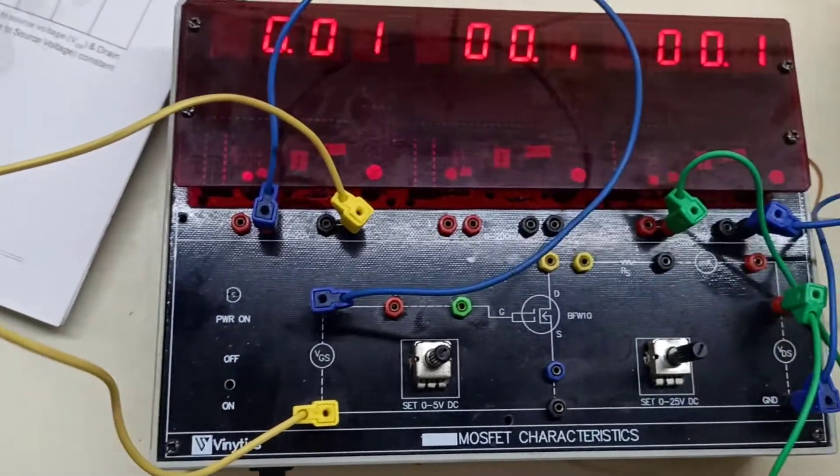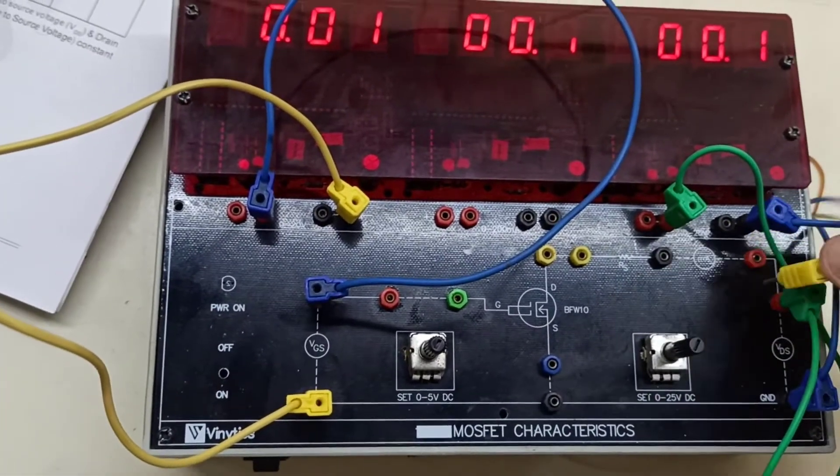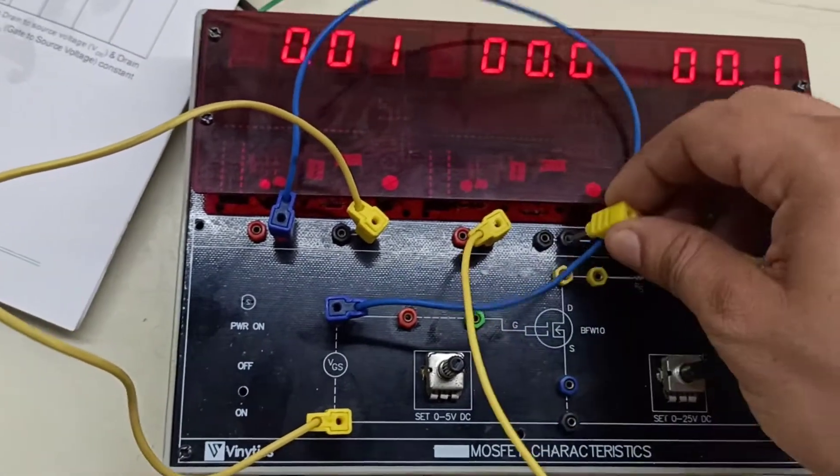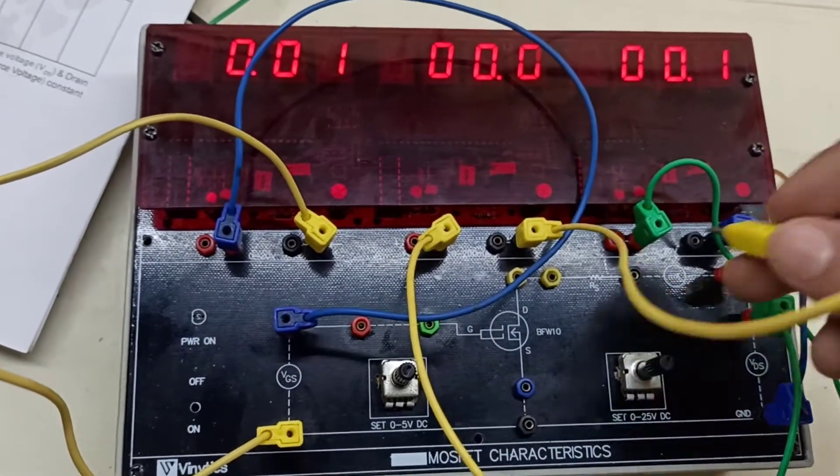Then we will connect our current meter. The current flow is from positive to negative, so connect red to red and black to black.